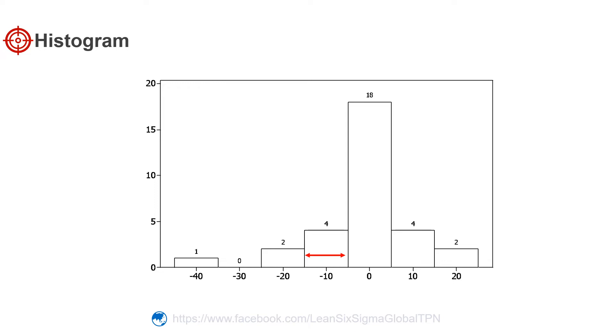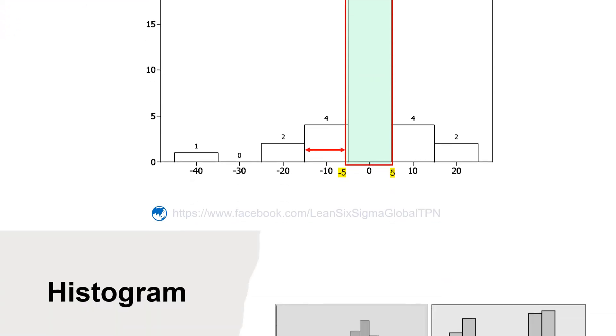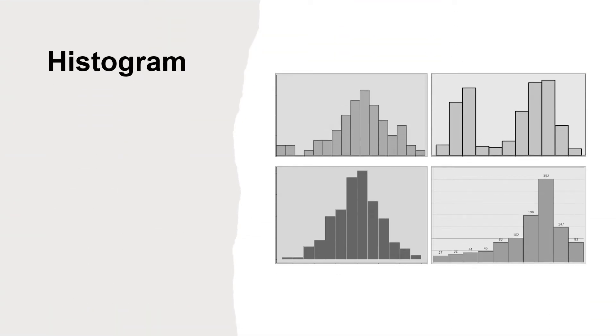Each bar represents the frequency of data values that occur in each interval. For example, this bar is 18 units high because there are 18 samples that fall between minus five and five.